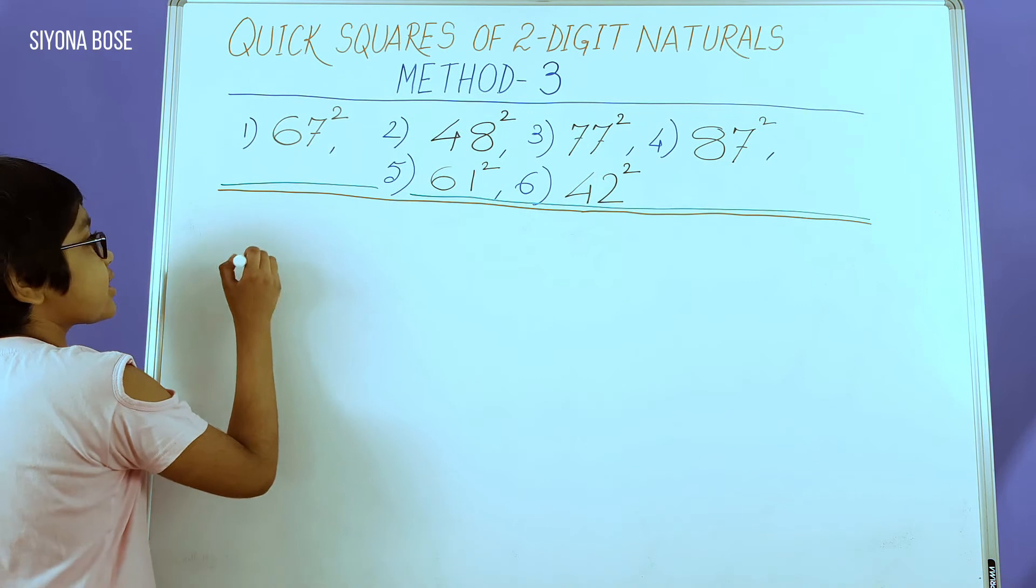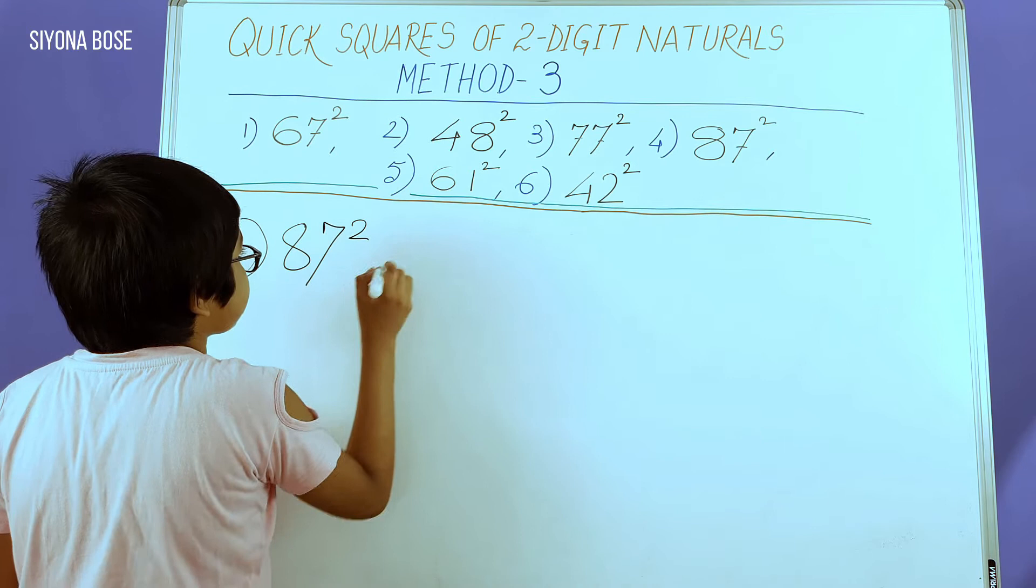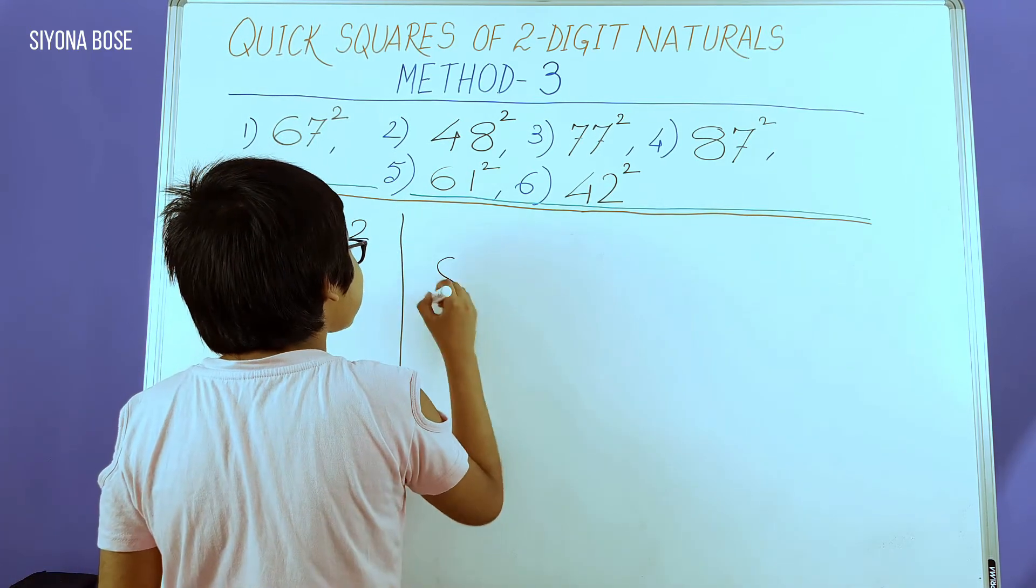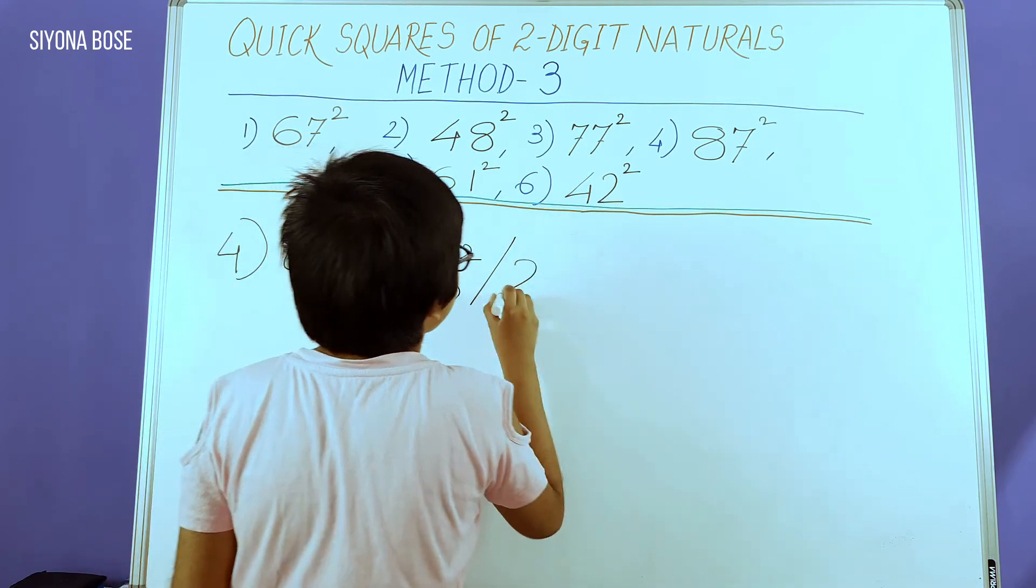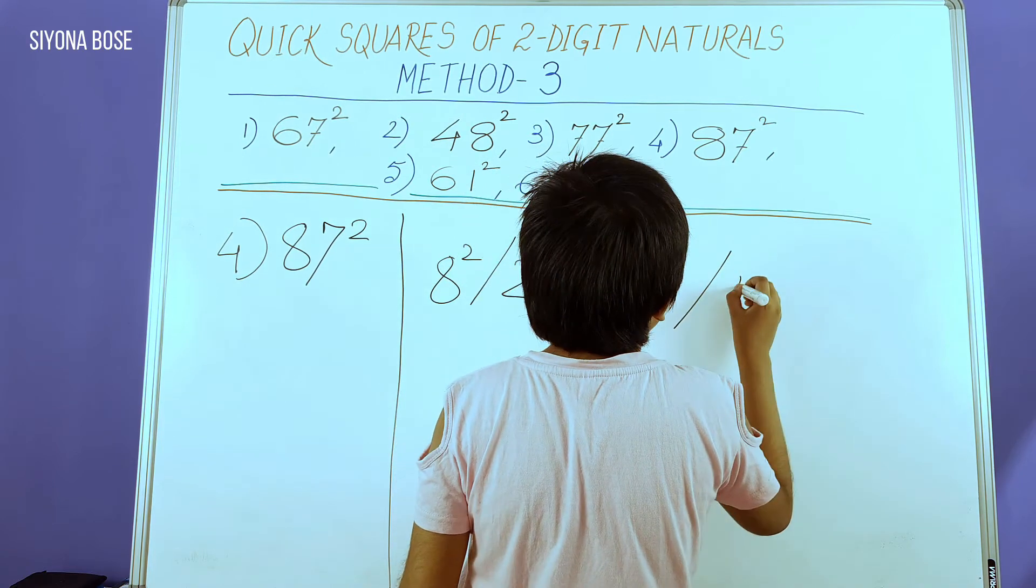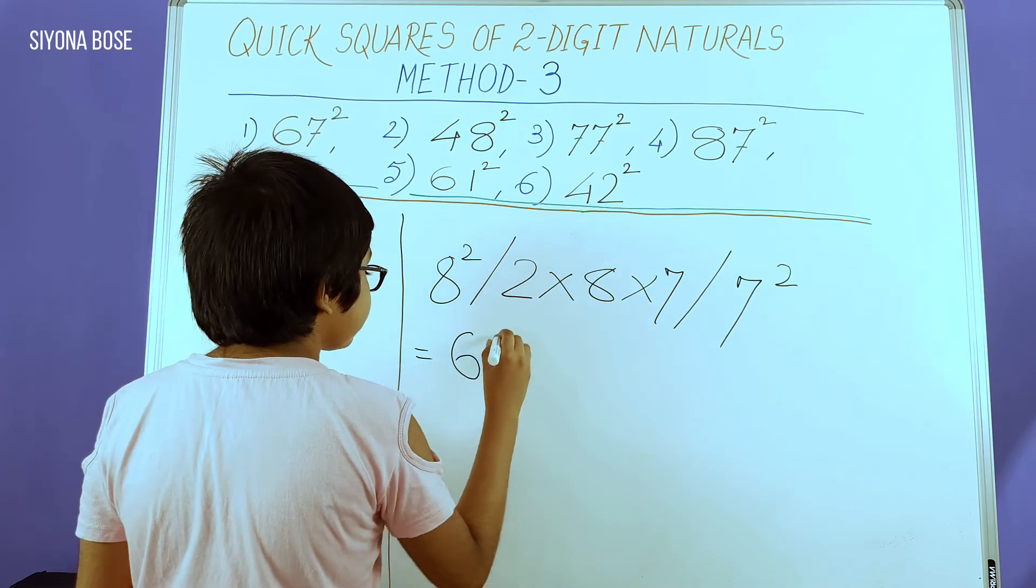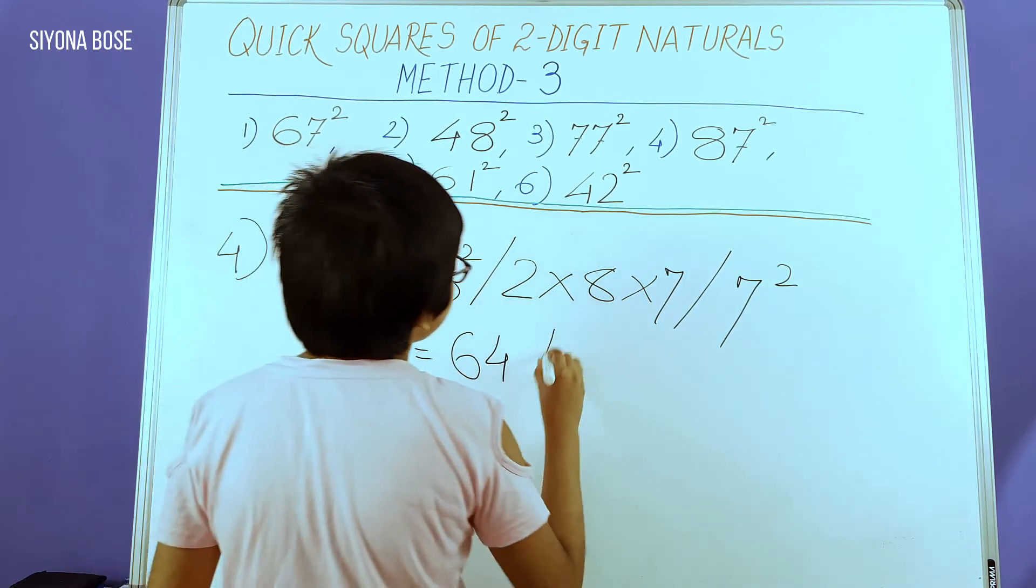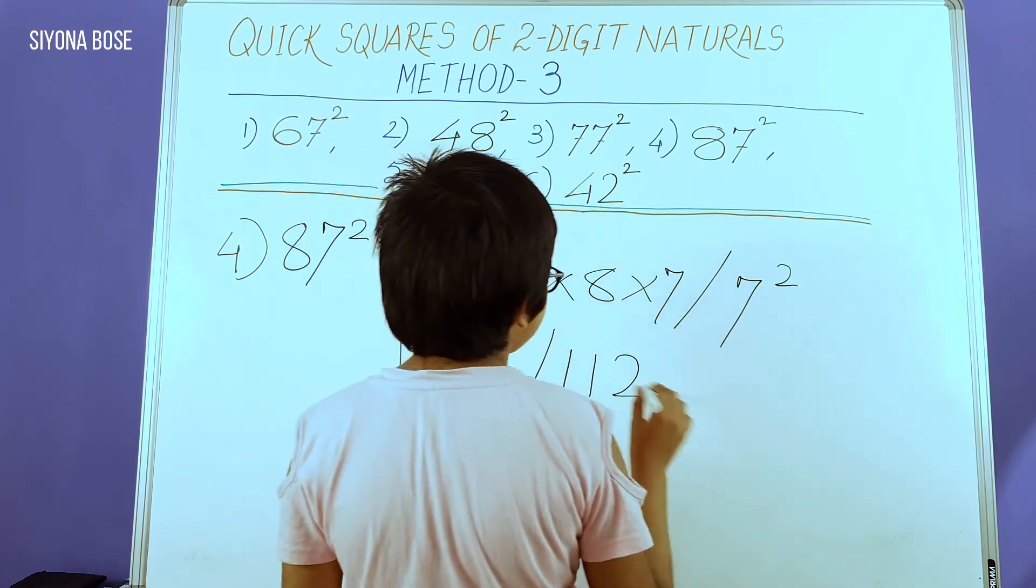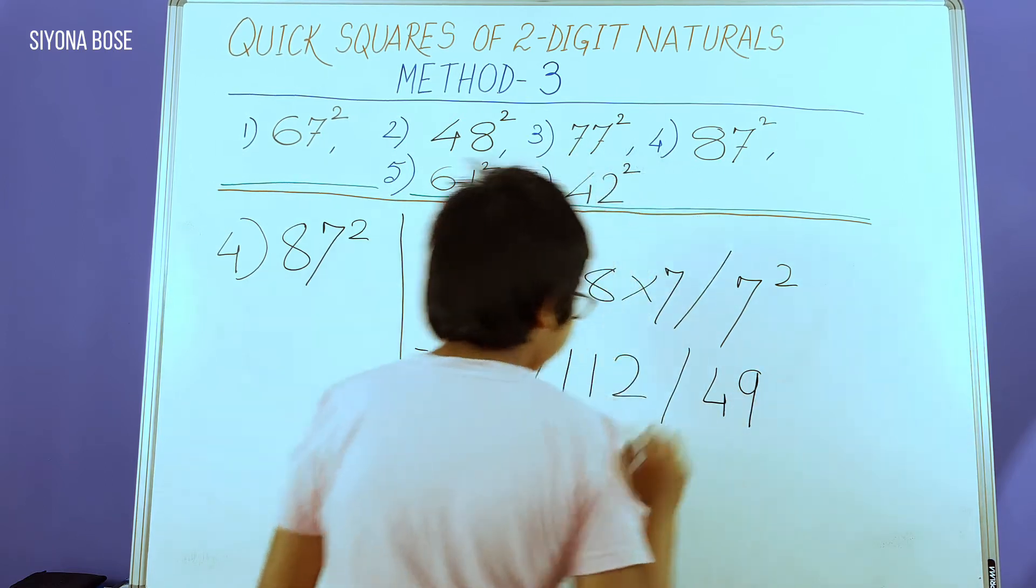Our next square is 87 squared. Again, we do the same process: 8 squared, 2 times 8 times 7, and 7 squared. Moving on: 8 squared is 64, 2 times 8 times 7 is 112. Don't freak out because it's 3 digits. I have a trick for everything. 7 squared is 49.